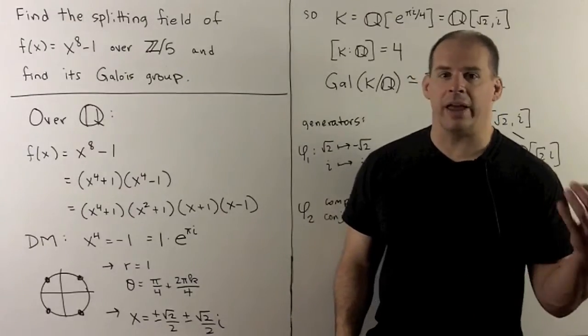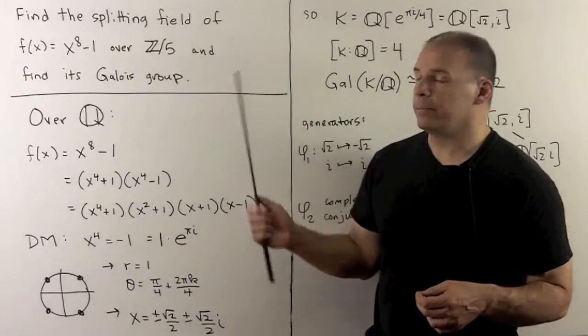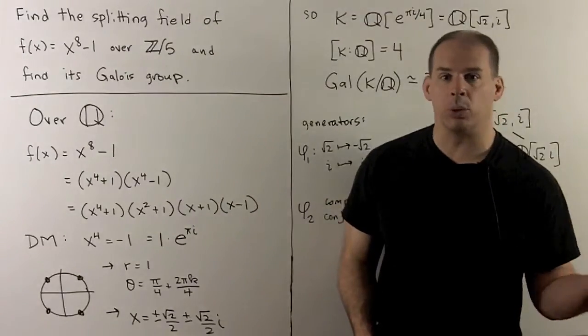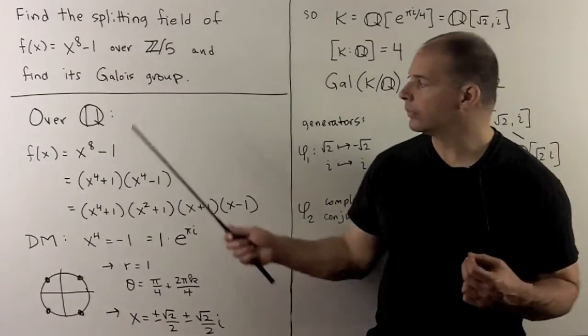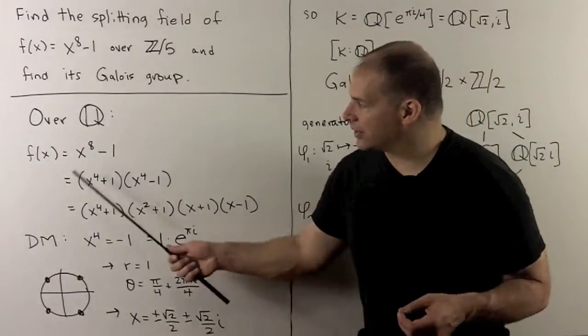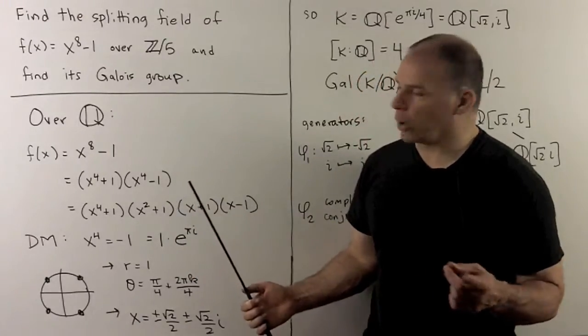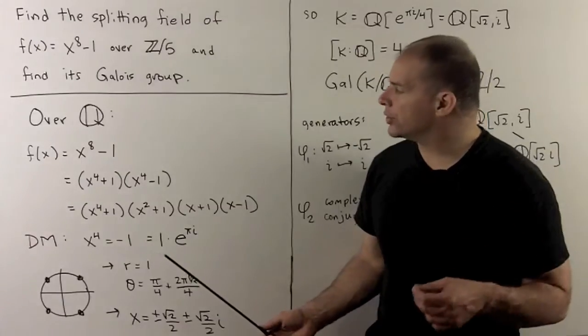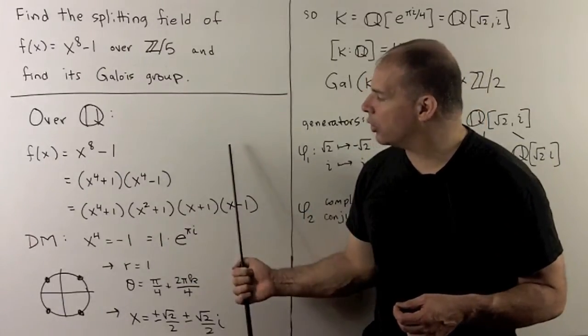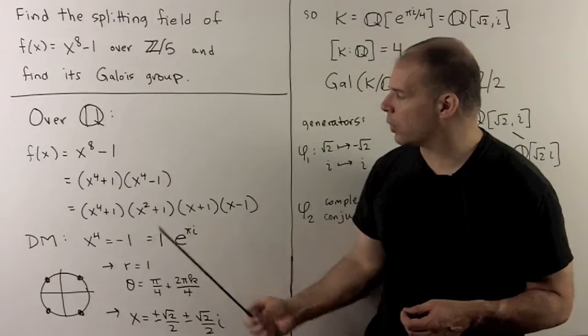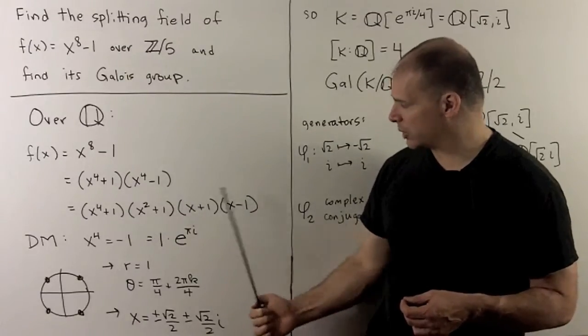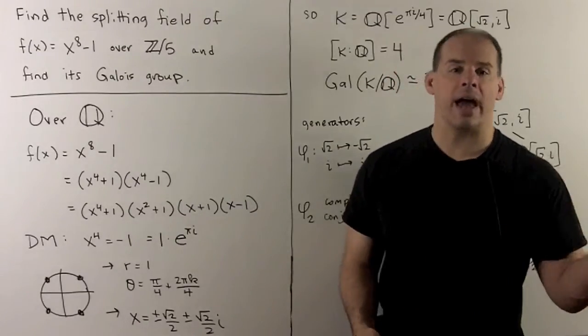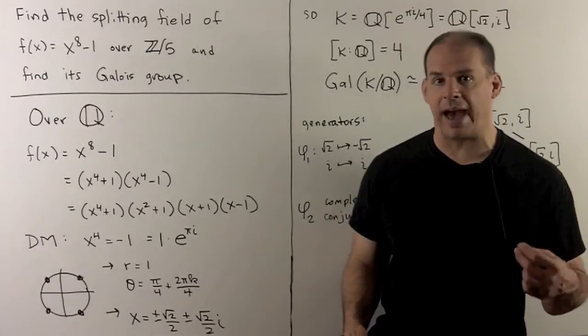Now, here we're just looking for the 8th roots of unity over Z mod 5, so let's first consider what happens when we work over the rationals. If I factor x^8 - 1, well, we can either repeatedly use difference of two squares, or we just note this factors into cyclotomic polynomials as follows. So we have x^4 + 1, x^2 + 1, x + 1, and x - 1 as factorization into irreducible factors.